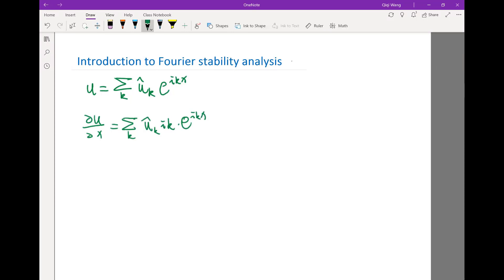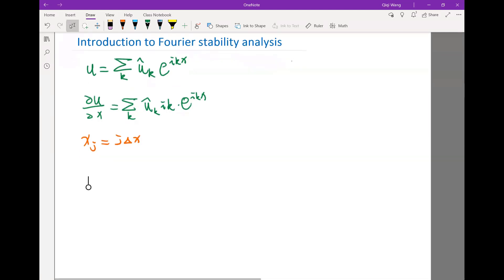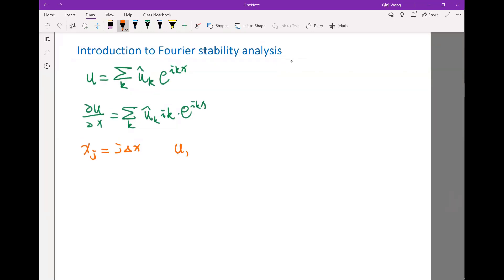Now let's take a look at if I apply a finite difference scheme. If I have a delta x, my xj, let me use j as my grid point, is equal to j delta x. So I have introduced the grid spacing of delta x over here. And uj, let's define it as u at x equal to xj.